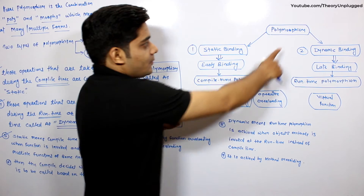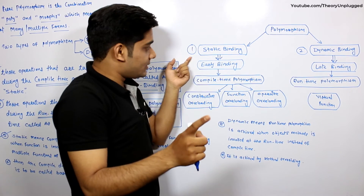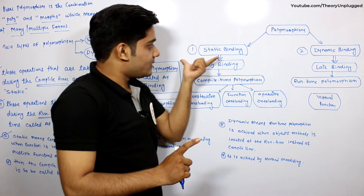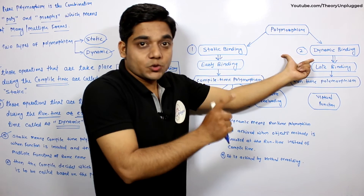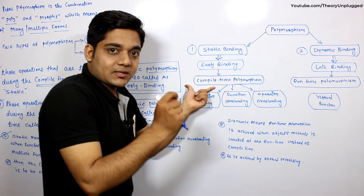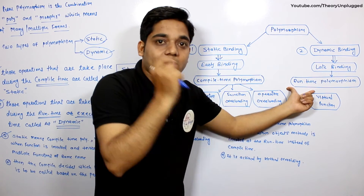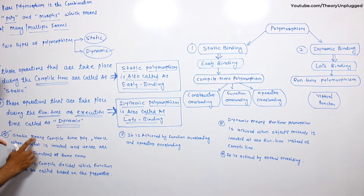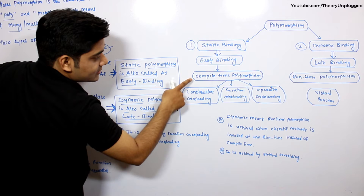Looking at the full diagram — polymorphism has two types: static and dynamic. Static is called early binding; dynamic is called late binding. Static takes operations at compile time, which is called compile time polymorphism. Dynamic takes operations at execution time or runtime, which is called runtime polymorphism.